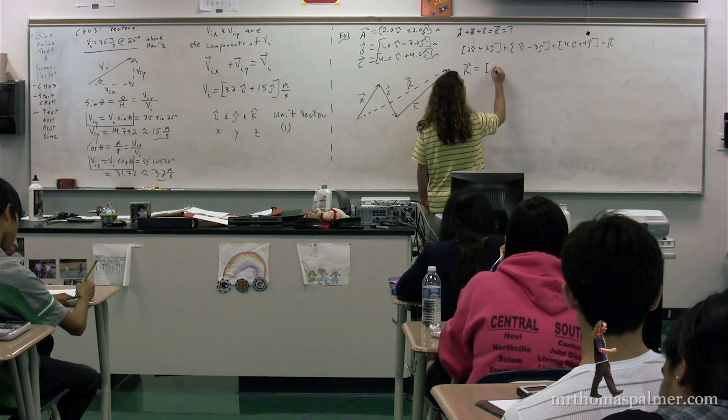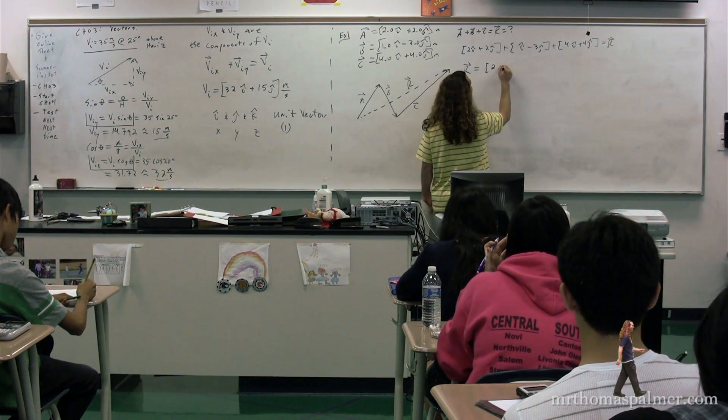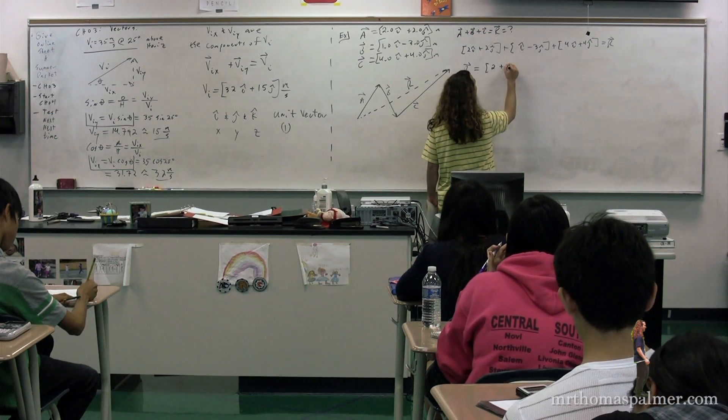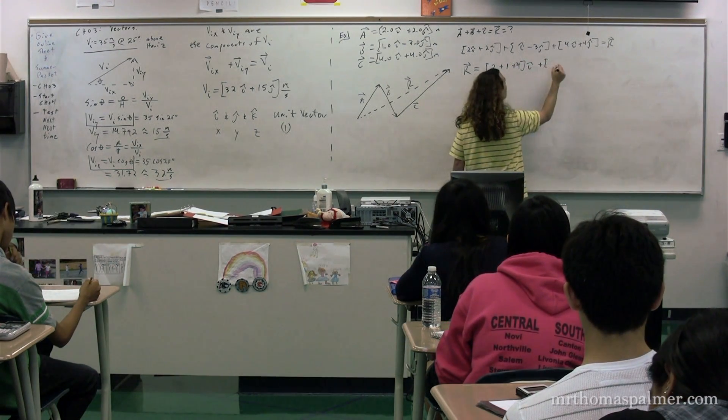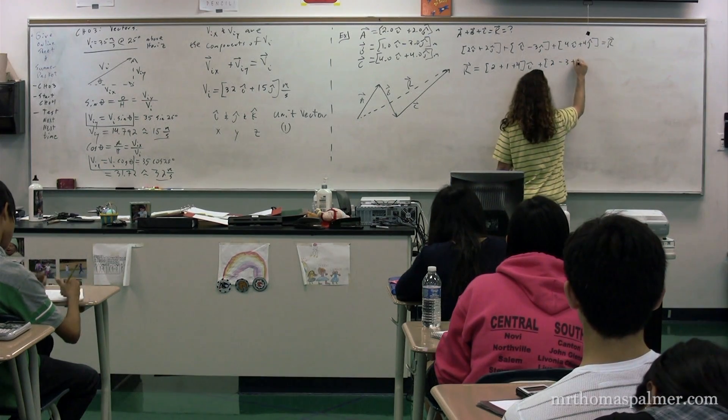So 2 plus 1 plus 4i, plus 2 minus 3 plus 4j.